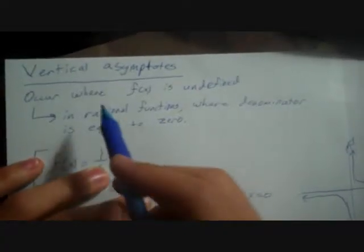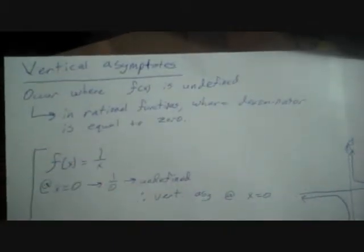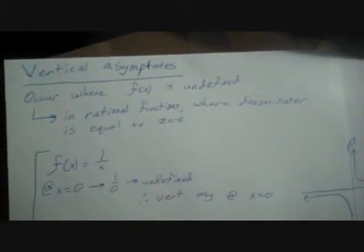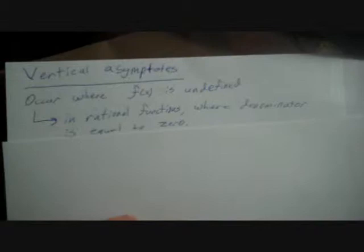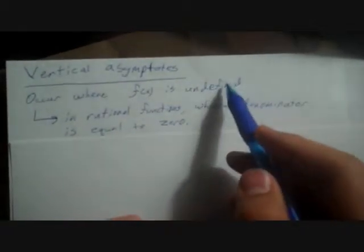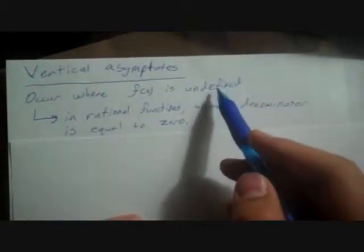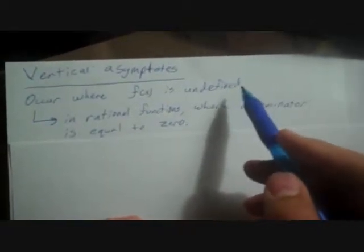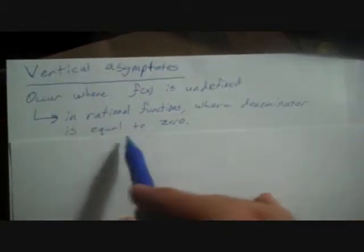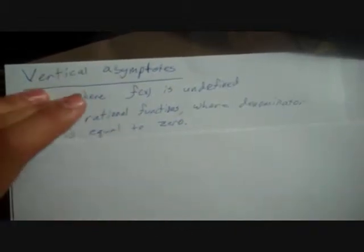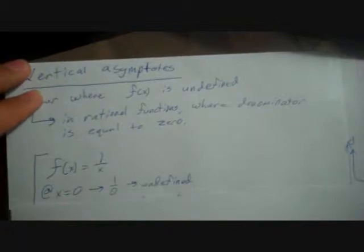Let's talk about vertical asymptotes. Vertical asymptotes are basically places where our function is undefined and can never have a value. In a rational function, that's where the denominator will be equal to zero.